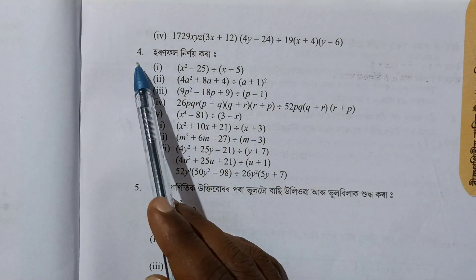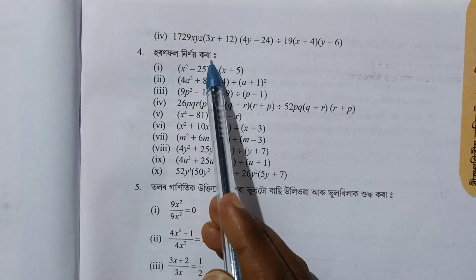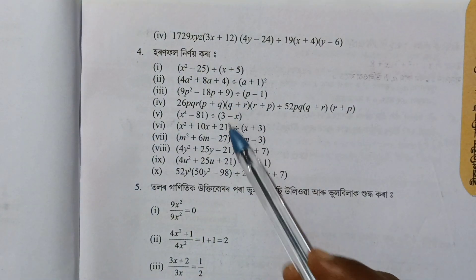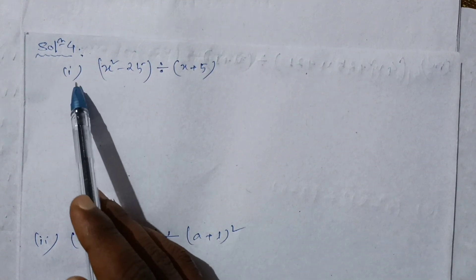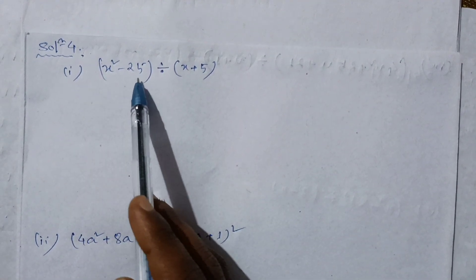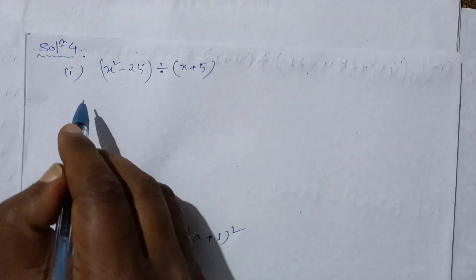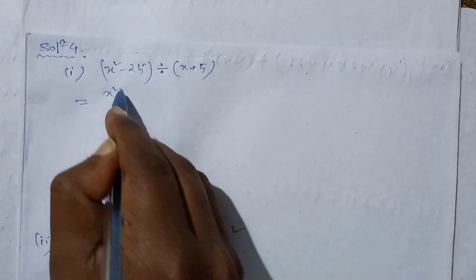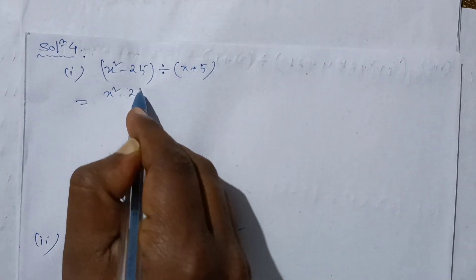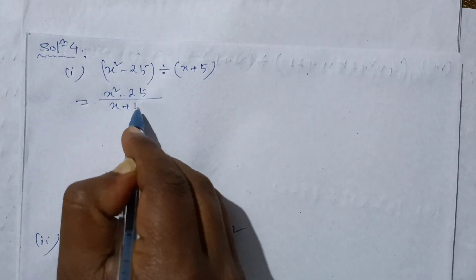Question number 4. The first question is x squared minus 25 divided by x plus 5. The second question is also x squared minus 25 divided by x plus 5.